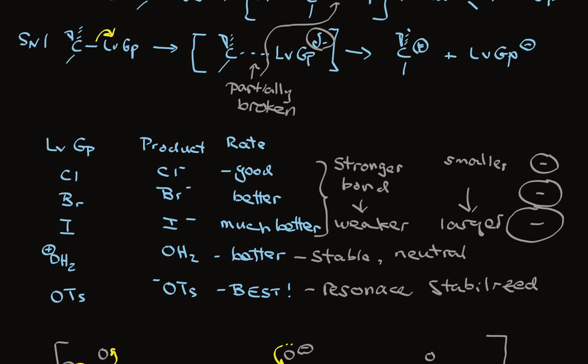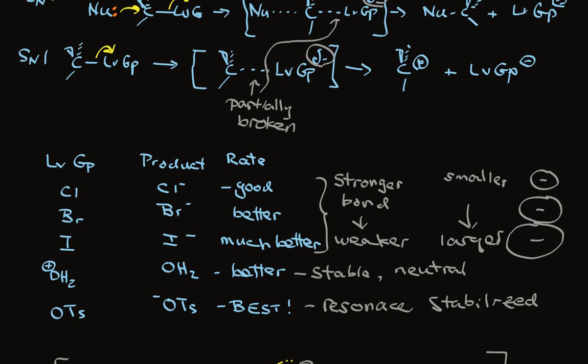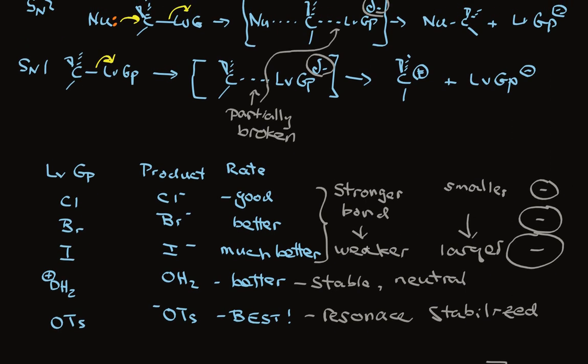So, to summarize, when we think about leaving groups in SN1 and SN2 reactions, we look directly at the transition state structure to determine the factors that affect its stability, its ease of formation. And those two factors with respect to the leaving group are how strong the bond is to the leaving group and carbon, and the development of partial negative charge and how readily that negative charge is stabilized.